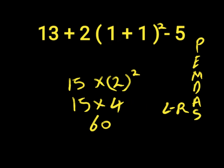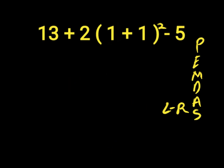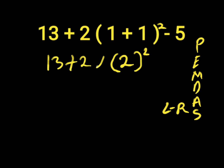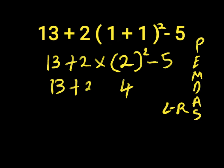So, let's find the right answer to this expression. First of all, we solve our parentheses which is 1 plus 1. 1 plus 1 will give us 2, then we put it in our exponent which is 2 to the power of 2. Then we have 13 plus 2 times 2 to the power of 2 minus 5. So, we solve our exponents next. 2 to the power of 2 is 2 times 2. 2 times 2 will give us 4.